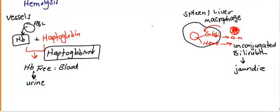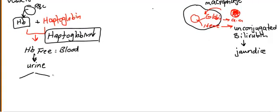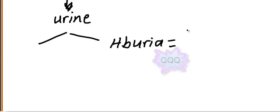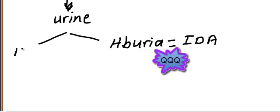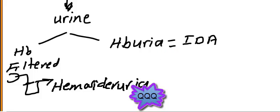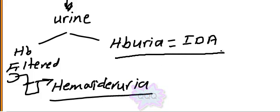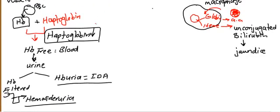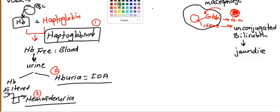Once hemoglobin enters the urine, there are two to three important consequences of intravascular hemolysis. First, hemoglobinuria, which leads to iron deficiency anemia. Second, hemoglobin filtered by the proximal tubules leads to hemosiderosis. Third, haptoglobin level decreases. Jaundice does appear due to unconjugated bilirubin released from hemoglobin, but it is in a small amount compared to extravascular hemolysis, so obvious jaundice is rarely seen in intravascular hemolysis.